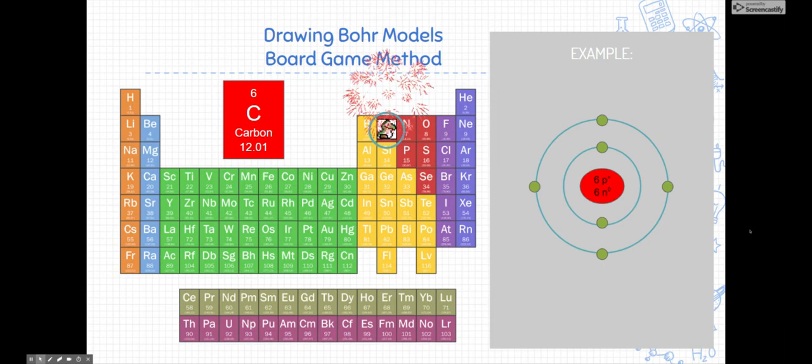And that's it. We did it. We built the Bohr model for carbon. We see that there are two low-energy electrons and four high-energy electrons. Congratulations.